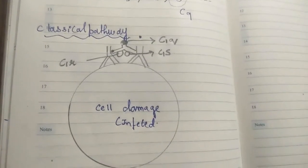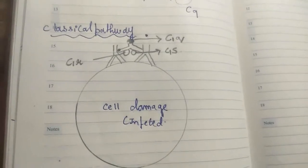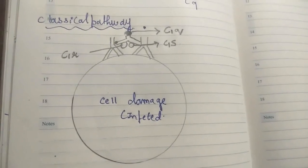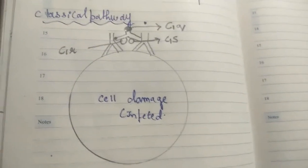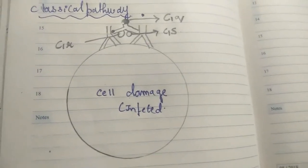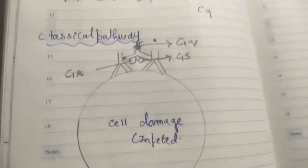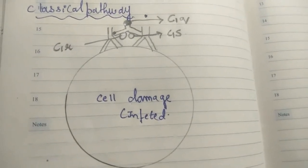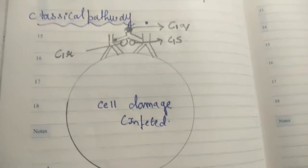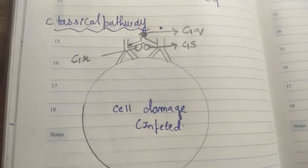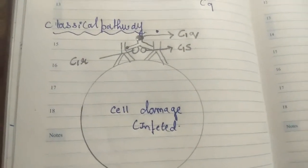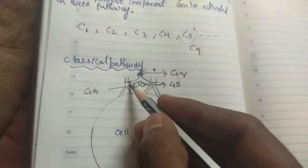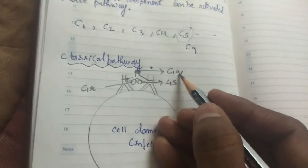Now I'll explain the complement system activation in depth. The classical pathway occurs whenever an antigen enters the body — any foreign substance is recognized as an antigen. I have drawn a cell that is infected by an antigen. The antibody, produced by B cells or plasma cells, has bound to the infected cell. The initial complement component C1q, which is inactive, will then bind to the Fc portion — the Fc binding region — of the antibody.